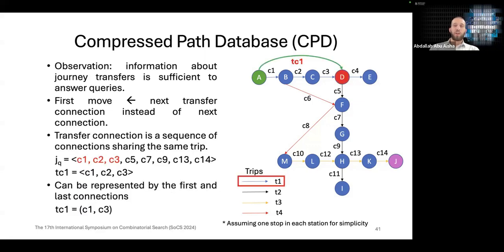What is transfer connection? Transfer connection is a sequence of connections that share the same trip or vehicle. So in our journey in this case, the first three connections C1, C2, C3 share the same trip T1 so they can be put into one transfer connection TC1. And also the transfer connection can be represented by the first and last connections like TC1 equals C1, C3.